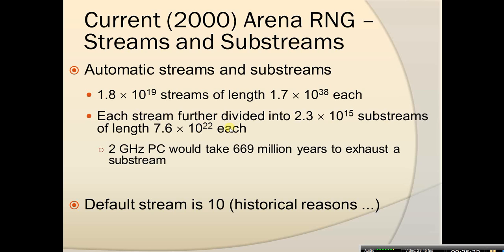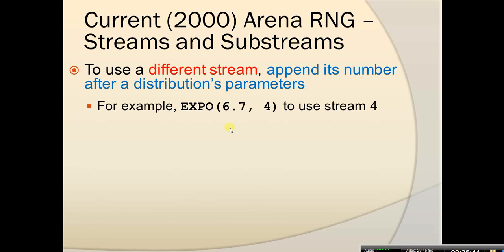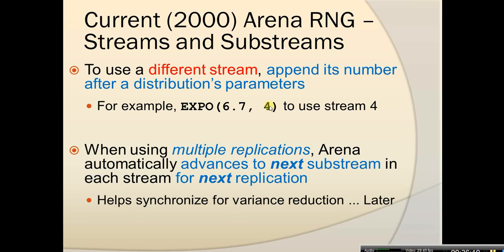The default stream is 10 for historical reasons, also used for the chance-type decide module. To use a different stream, append the stream number after a distribution's parameters. For example, with an exponential distribution, adding a second parameter 4 tells ARENA to use the fourth substream. When using multiple replications, ARENA automatically advances to the next substream in each stream for the next replication, which helps synchronize for variance reduction.